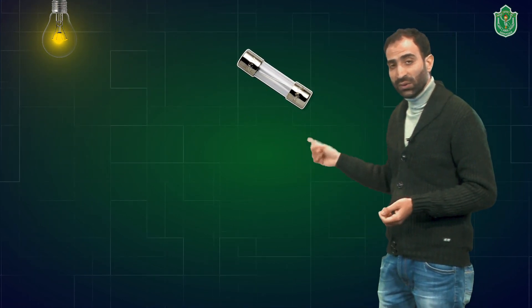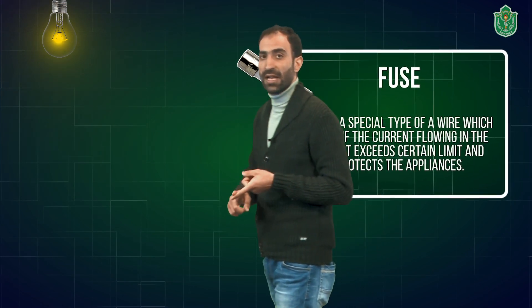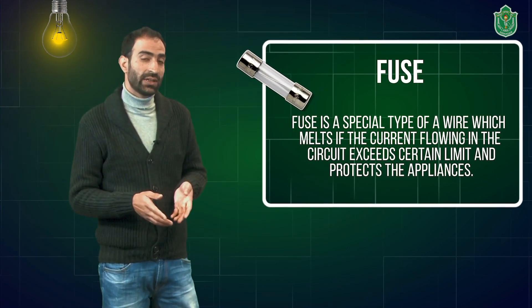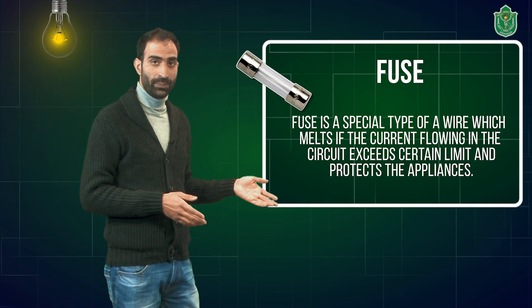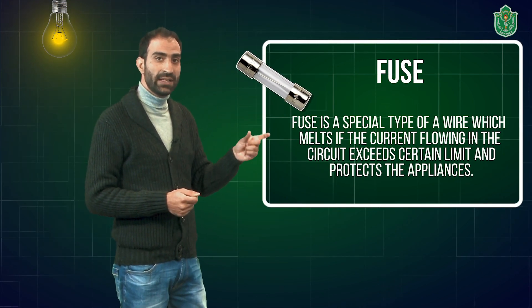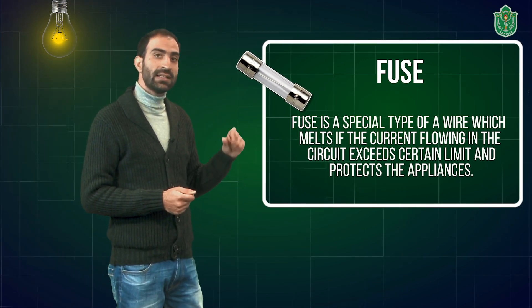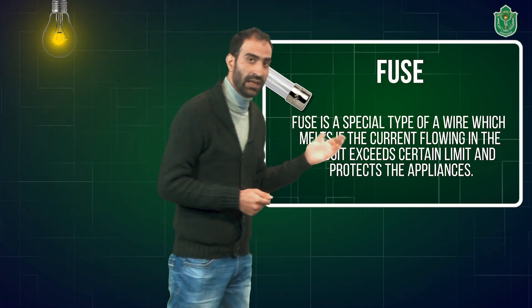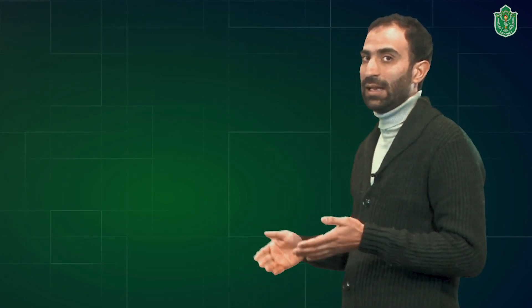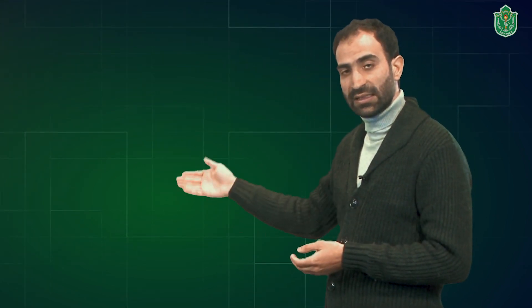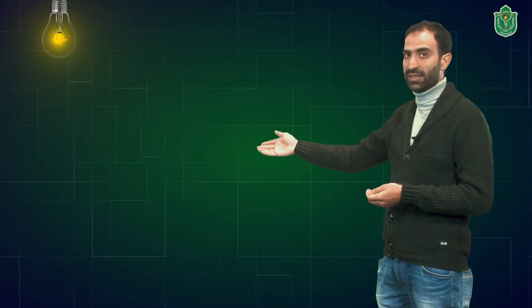A fuse is a special type of wire — or rather, a safety device — which comes with a specified melting point, meaning a specified amount of electric current. If the amount of electric current exceeds that limit, the fuse melts, thereby breaking down the circuit and stopping the flow of electric current, thus protecting our electrical appliances and the electrical wiring present in our homes and workplaces.